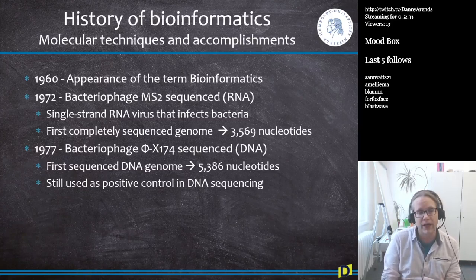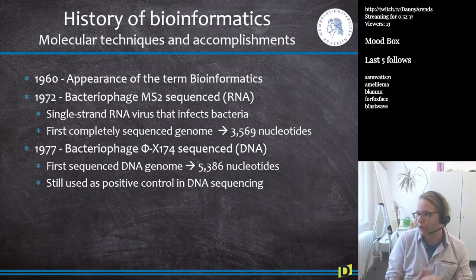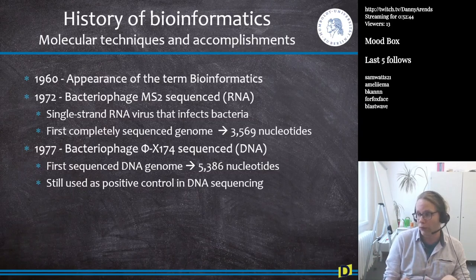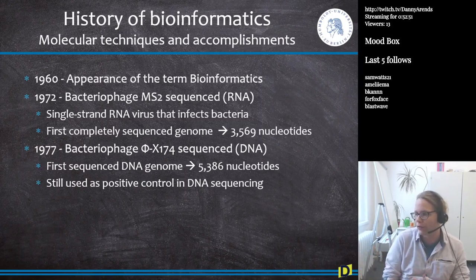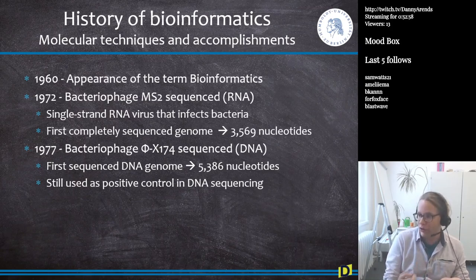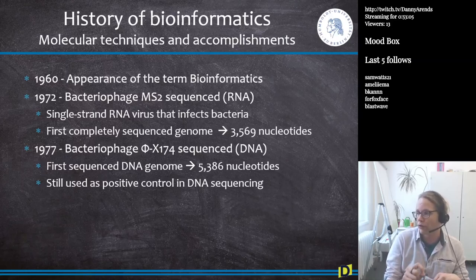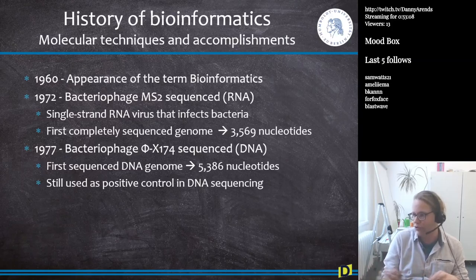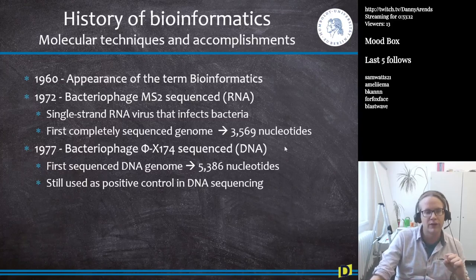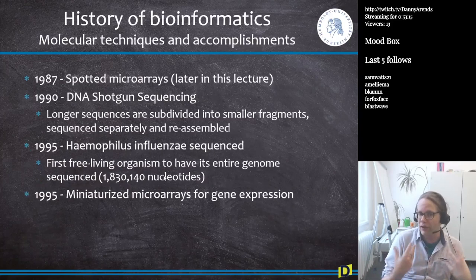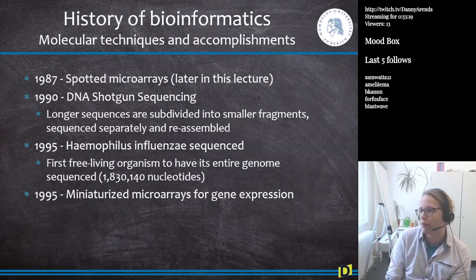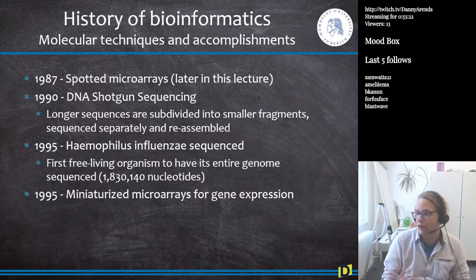Bacteriophage ΦX174 is still used today as a positive control in every DNA sequencing run in the world — there are probably tens of thousands of sequencers active at any given point, and this phage's DNA is always added to ensure the sequencer is working properly. In 1987 came the invention of spotted microarrays, which allow us to measure how much a gene is expressed.